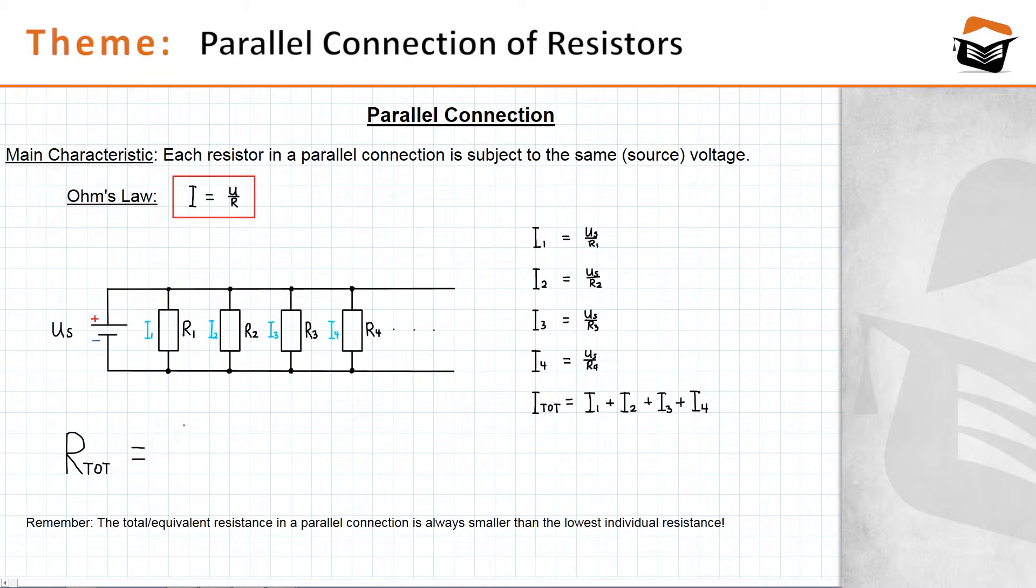The total current is basically the current that is drawn from the voltage source. Now, as you can remember, for a series connection, the total resistance or the equivalent resistance is the sum of all individual resistances.